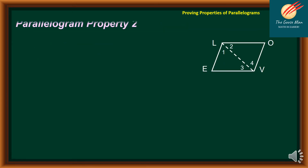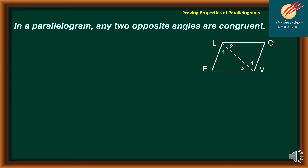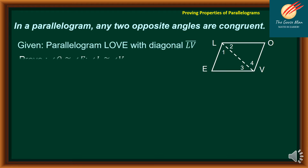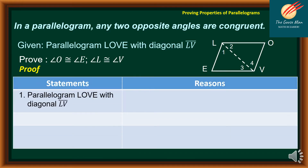Let's move on to the second property of a parallelogram: in a parallelogram, the two opposite angles are congruent. We have our illustration on the right side. The given are parallelogram LOVE with diagonal line segment LV. We would like to prove that angle O is congruent to angle E, as well as angle L is congruent to angle B. For statement number one, we have parallelogram LOVE with diagonal line segment LV, and the reason is given.